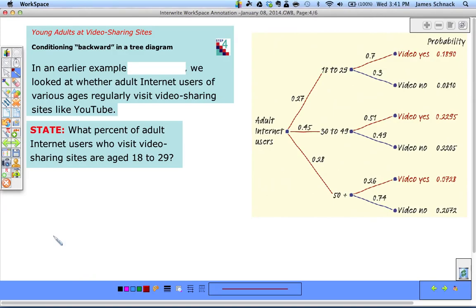Here we go, another four-step process. We're going to be working backwards through a tree diagram. We're coming back to this Internet and video sharing site example where we looked at whether adult users of various ages visited video sharing sites like YouTube. So 25% of Internet users were from 18 to 29, 45% were from 30 to 49, and 28% above 50.